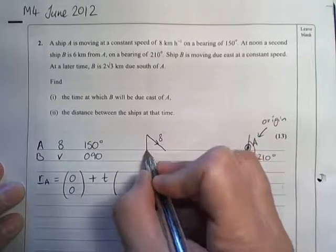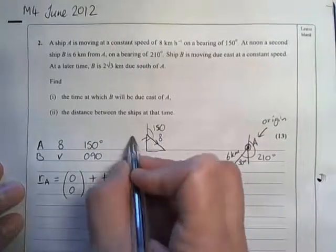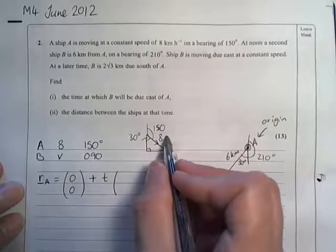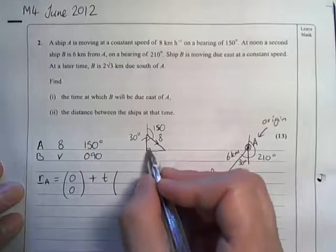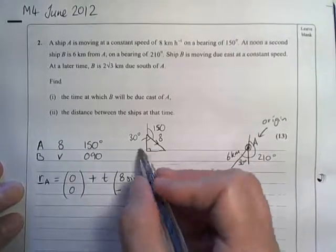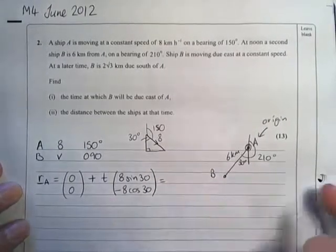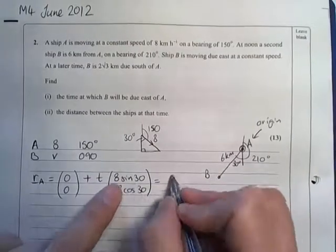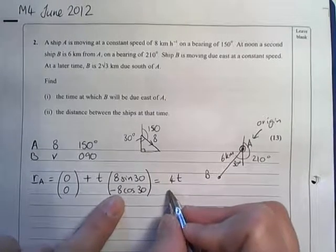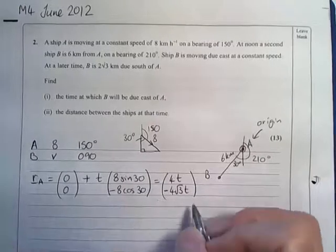A's velocity was 8 on a bearing of 150, so we have 8 going in this direction. A bearing of 150 means here we would have 150, and so here we would have 30 degrees. This gives a positive I component of 8 sine 30 and a negative J component of 8 cosine 30. So the position of A at any time is 4t and minus 4 root 3 t in the J direction.